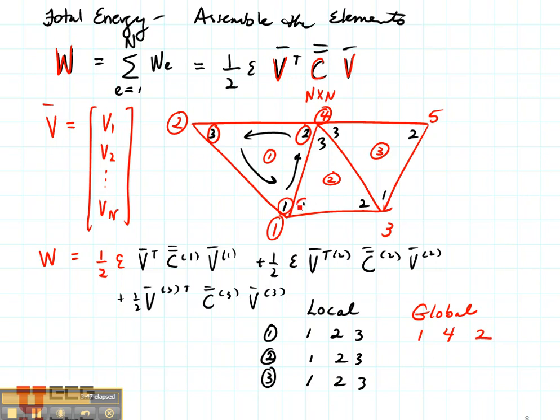For element number two, local node one is global node one. Local node two is global node three. And local node three is global node four. And now see if you can get this one yourself.